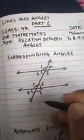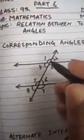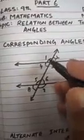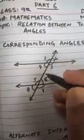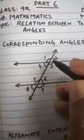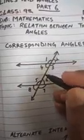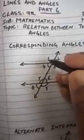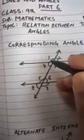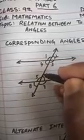Let us see what we mean by Corresponding Angles — which angles are Corresponding Angles and what is the relation between them. First we will see which angles are corresponding angles. If we see this transversal, on the left of this transversal on the external side, there is Angle 1. Angle 1 is on the left of this transversal and it is the external angle.